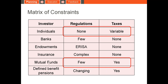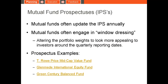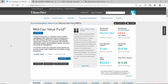Most of the funds we'll look at in this class will be mutual funds, with some endowments and individual investor cases as well. Now that you know the basics of IPS's, let's take a look at a few examples for mutual funds. We'll start with the T. Rowe Price Mid Cap Value Fund.